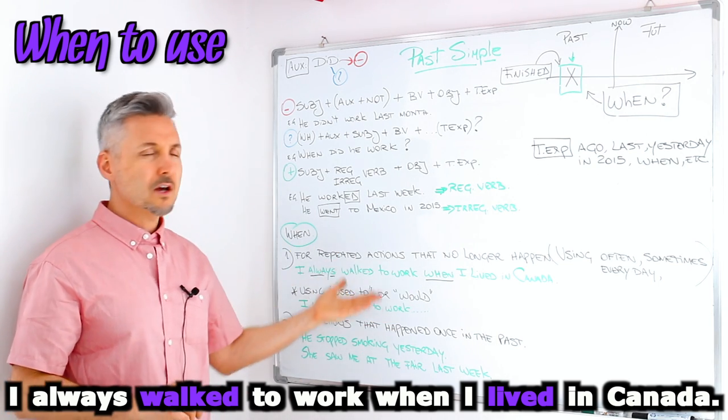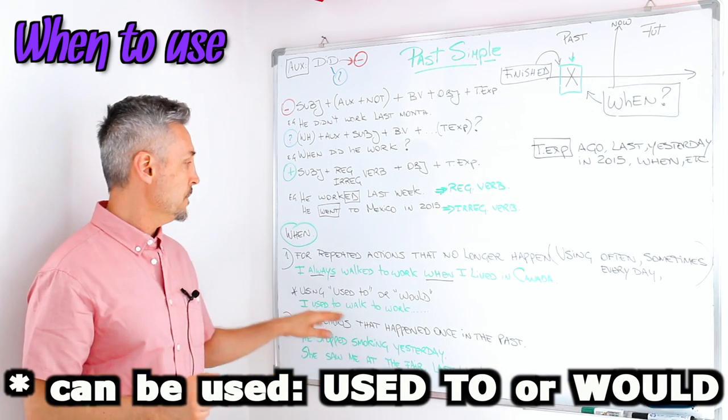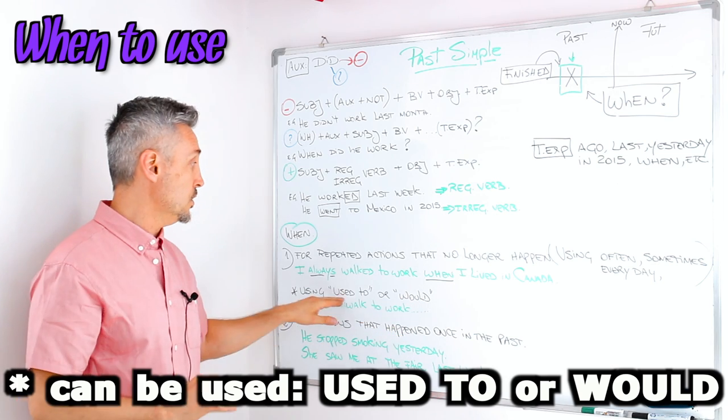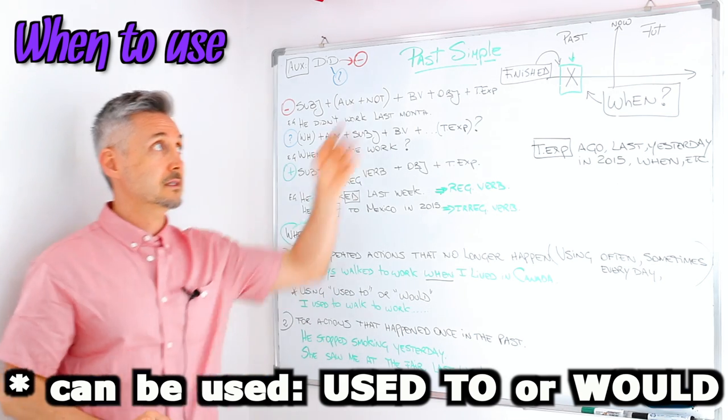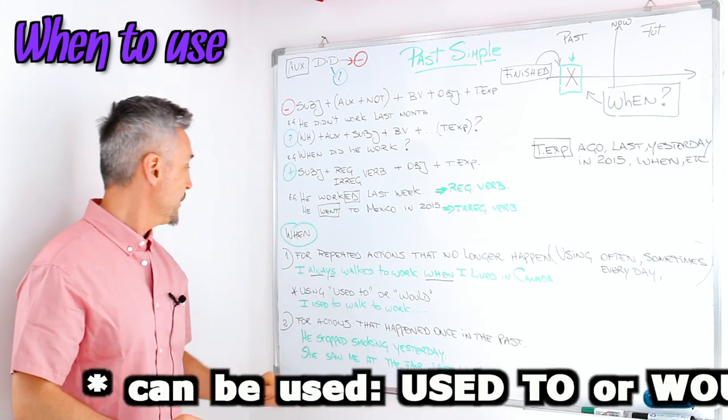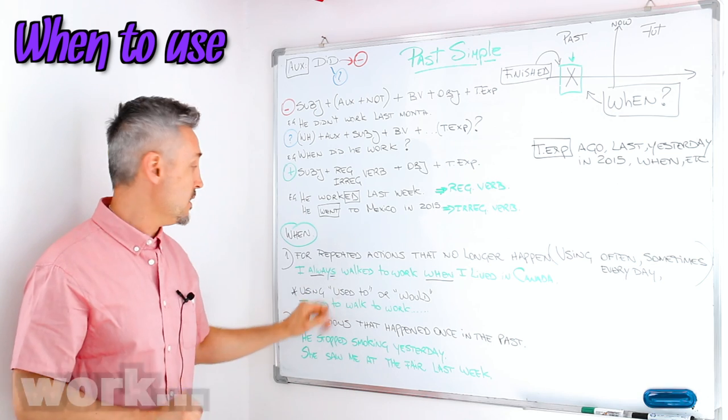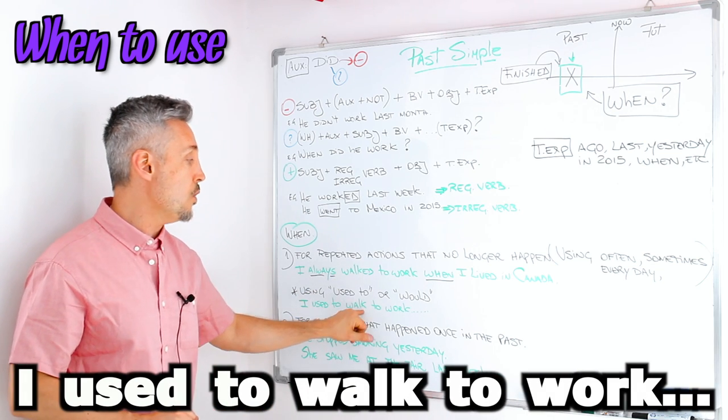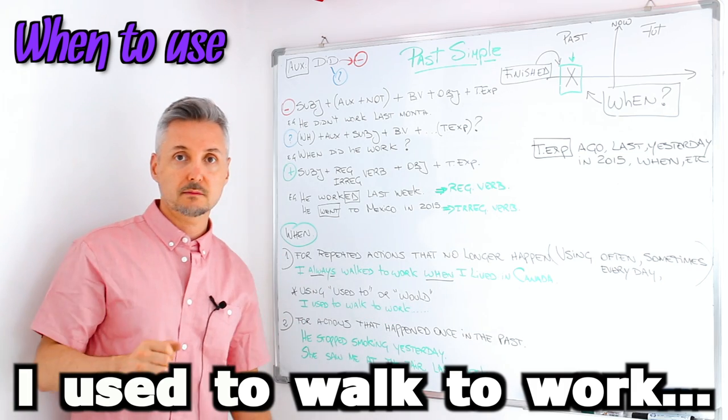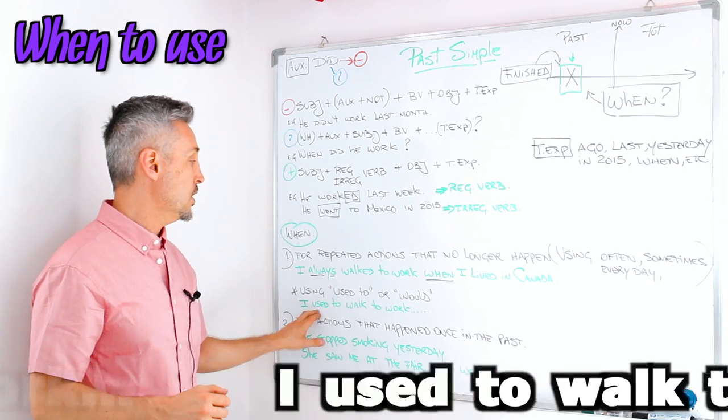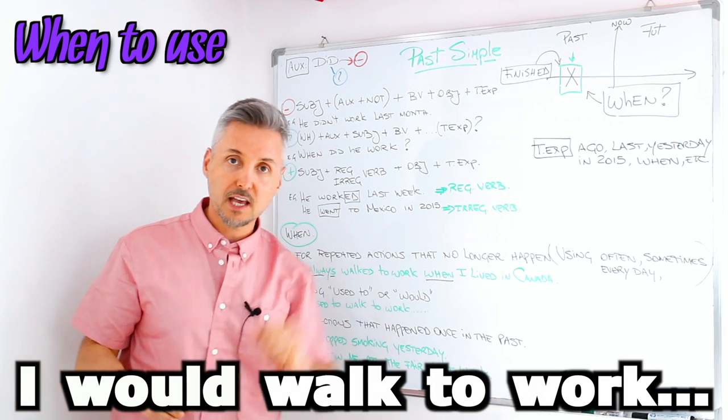So we can also use used to or would. Now there is a lesson specifically on used to and would. If you want to watch all those lessons, you may click here. So I could say the same thing that I said before: I used to walk to work when I lived in Canada. Or, I would walk to work when I lived in Canada.